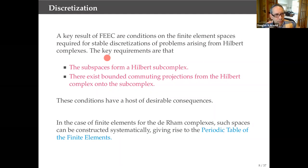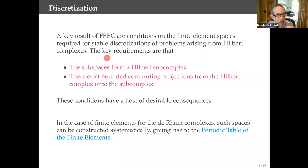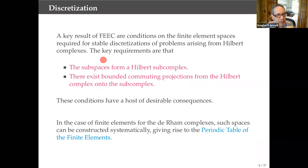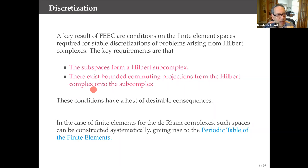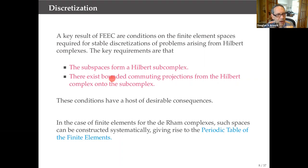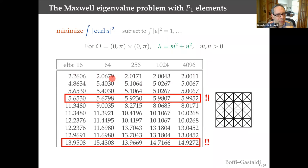A key result of FEEC are the conditions on finite element spaces needed to discretize problems arising from Hilbert complexes. The key requirements are: the discrete Galerkin subspaces themselves must form a Hilbert subcomplex of the true complex, and there must exist bounded commuting projections from the Hilbert complex onto the subcomplex. Those are the basic hypotheses. The difference between a numerical method that preserves these structures and one that doesn't is huge — the difference between getting the right answer and not.